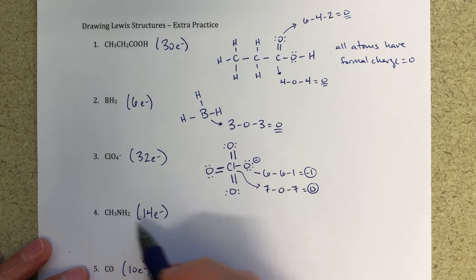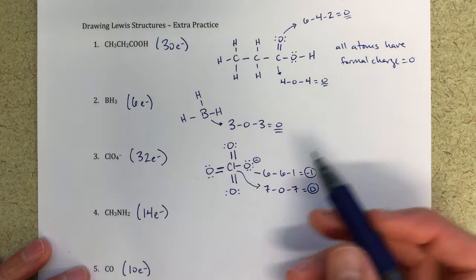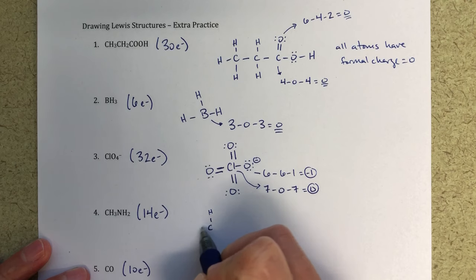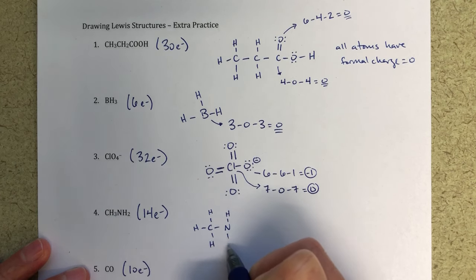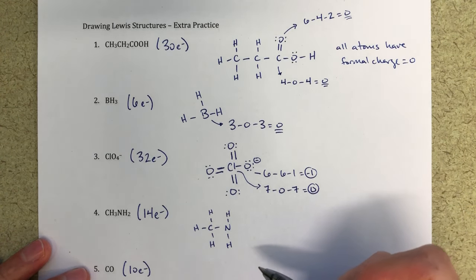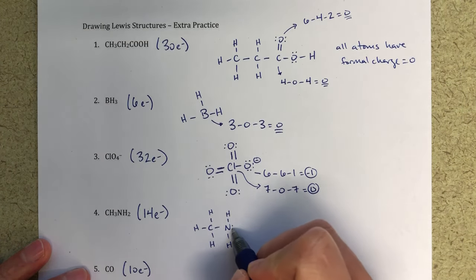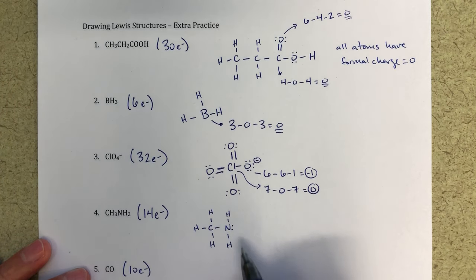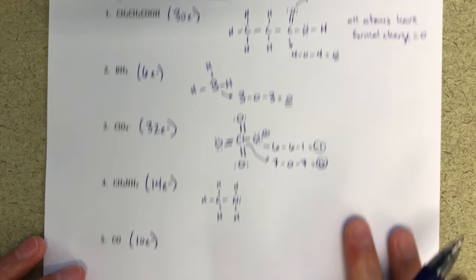CH3NH2: just like the CH3 group we saw before, we start with CHHH then NH2 as the skeleton structure. Nitrogen hasn't fulfilled the octet rule yet. Counting electrons: 2, 4, 6, 8, 10, 12 — I've got two electrons left over, which go on the nitrogen as a lone pair. Now the octet rule is fulfilled and formal charges are minimized. Carbon and nitrogen always follow the octet rule. This is the best structure for CH3NH2, and everything has zero formal charges.